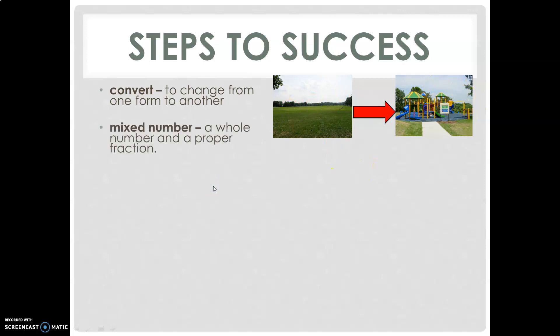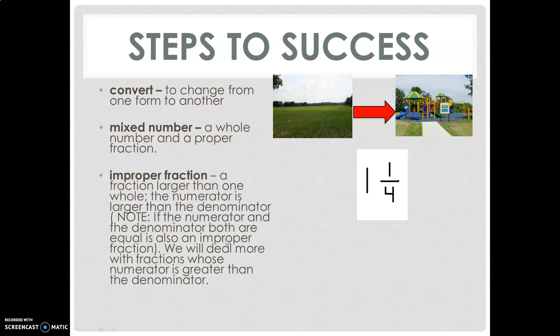Mixed number: a whole number and a proper fraction — for example, one and one upon four. Improper fraction: a fraction larger than one whole, where the numerator is larger than the denominator.